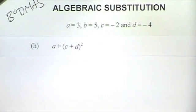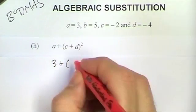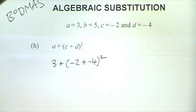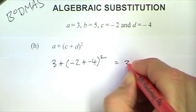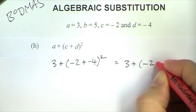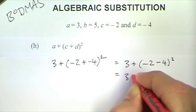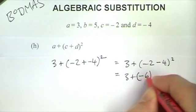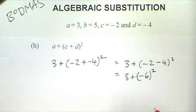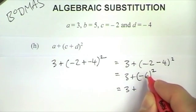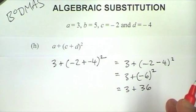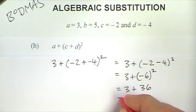The last expression is a plus bracket c plus d close bracket squared. Substituting the values: 3 plus bracket, c is minus 2 plus d is minus 4, close bracket, all squared. I've got to do the brackets first. Inside the bracket, minus 2 plus minus 4 is minus 6. So that becomes 3 plus bracket minus 6 close bracket squared. I'll keep the bracket because it's a negative number. Minus 6 squared is minus 6 times minus 6, which is 36. So that's 3 plus 36. The correct answer is 39.